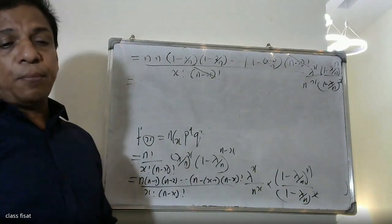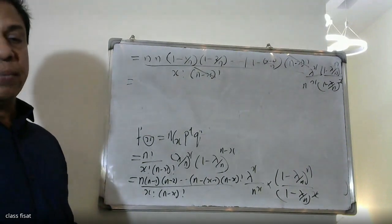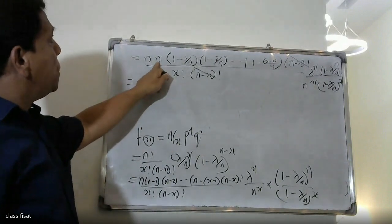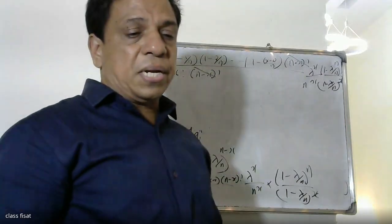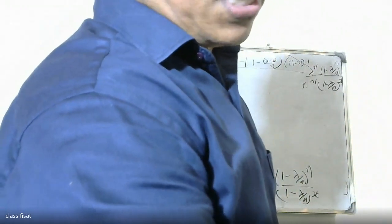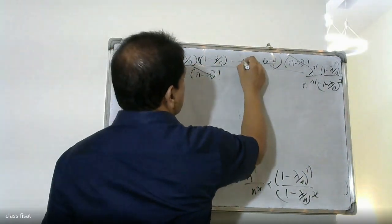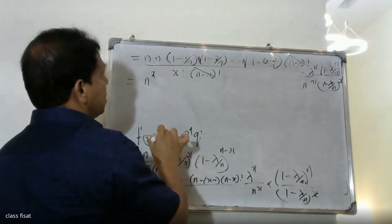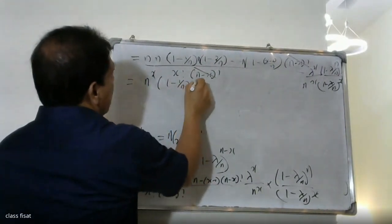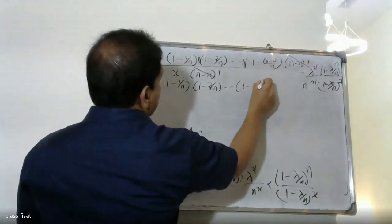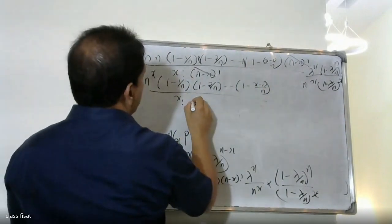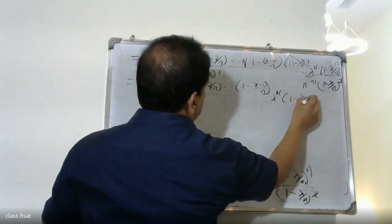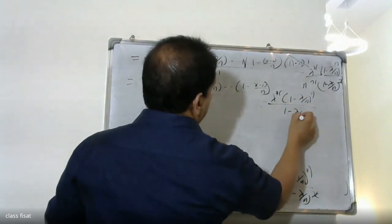We will have n raise to x. So we get: 1 minus 1 by n, times 1 minus 2 by n, times 1 minus x minus 1 by n, divided by x factorial times n raise to x, times lambda raise to x, times 1 minus lambda by n all raised to n, divided by 1 minus lambda by n all raised to x.